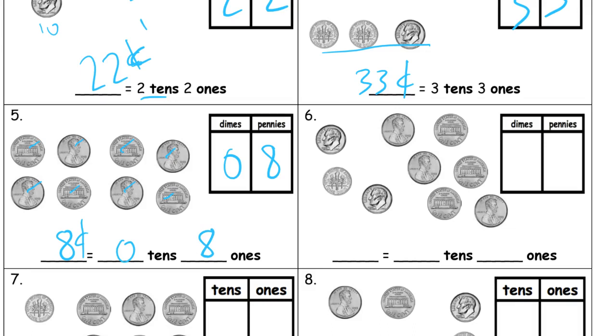And now here we're looking for dimes. We have one, two, three pennies and one, two, three, four, five, six dimes. Thirty-six equals three tens and six ones.